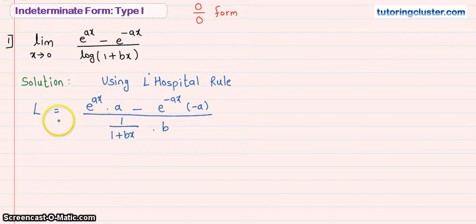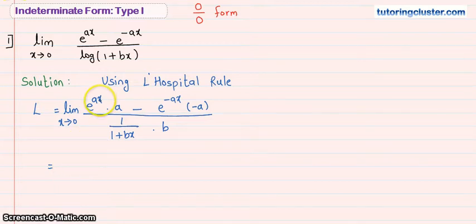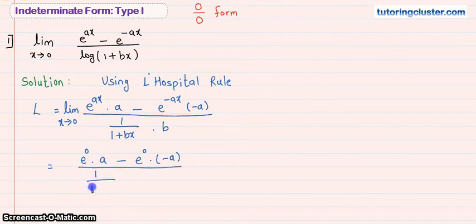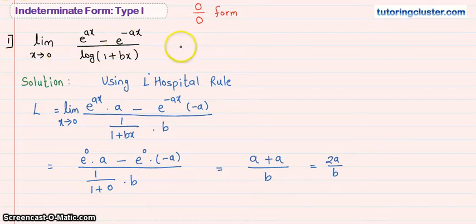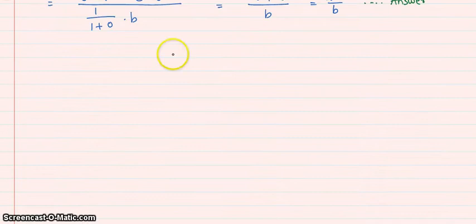Now putting x equal to 0: e to the power 0 is 1, so the numerator becomes a minus (−a) = 2a. The denominator becomes b/(1+0) = b. So the answer is 2a/b.